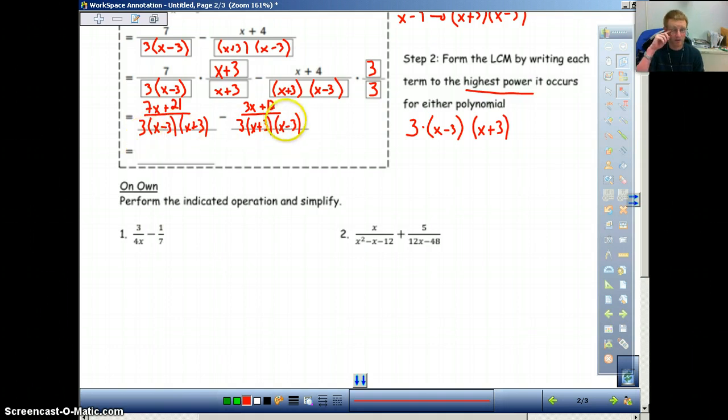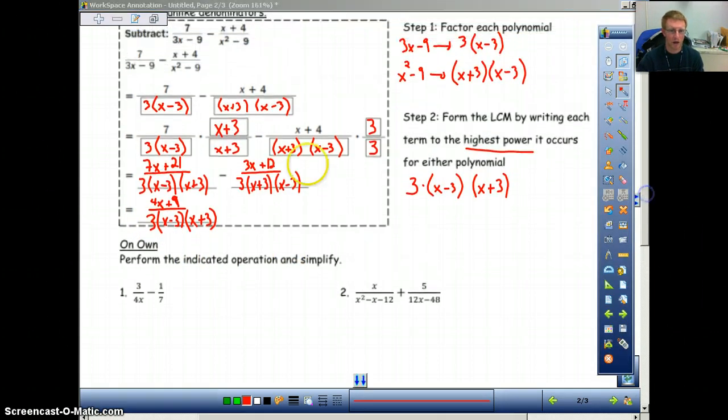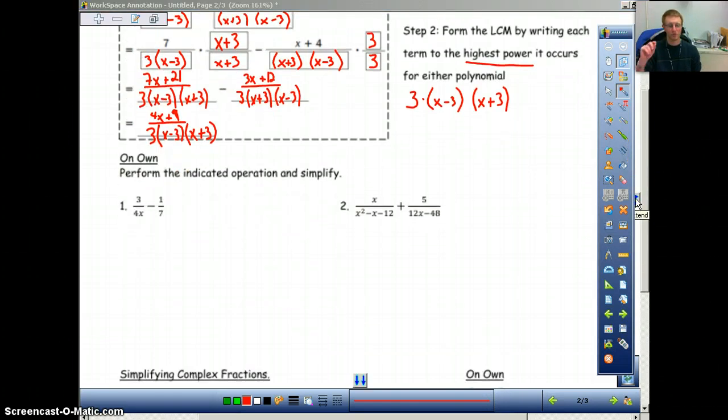Now our denominators are exactly the same. So all we need to do is combine what's on the top. So we do 7x minus 3x is 4x. 21 minus 12 is 9. So we have 4x plus 9 on top, and then our denominator stays exactly the same. And from here, you leave it like this. There's nothing else you need to do unless something can be factored still, unless something can be canceled out. Nothing here can be canceled out. 4x plus 9 cannot be canceled out with anything on the bottom, so we leave it as is. So again, if you need to re-watch this, re-watch this and try and see how I got it. Otherwise, go ahead and do these two below on your own. The first one should be easier than the second one, and then just go ahead and hit play when you're ready.